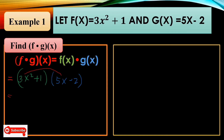3x² times 5x is 15x³ (add the exponents of the variables). Then 3x² times −2 is −6x². Positive 1 times 5x is +5x. Positive 1 times −2 is −2. So the final answer for the product of f and g(x) is 15x³ − 6x² + 5x − 2.